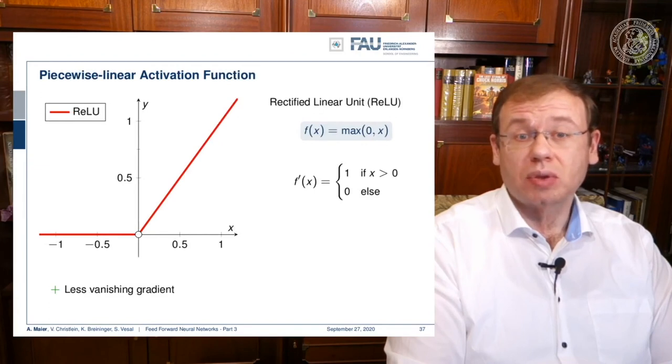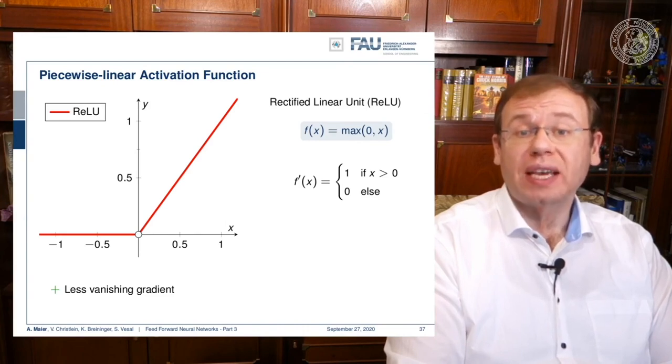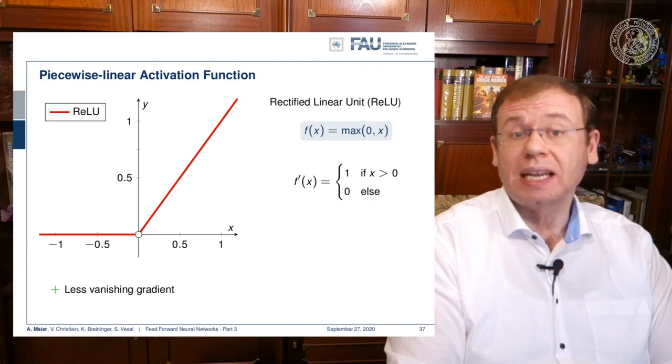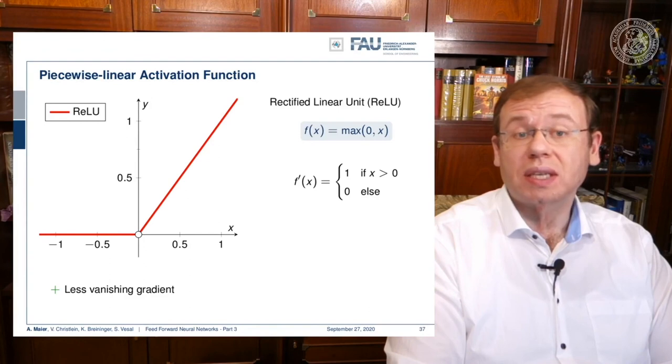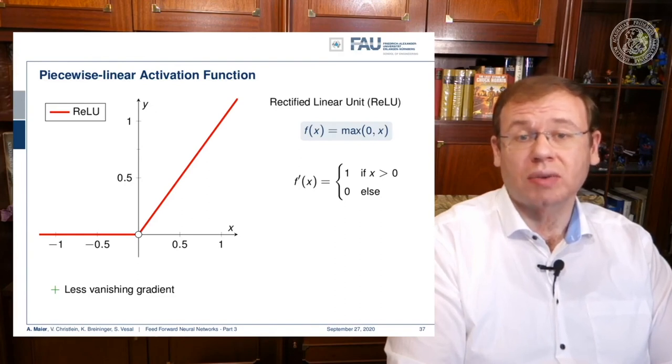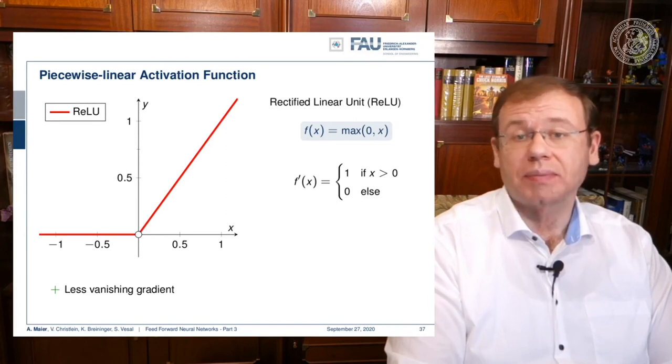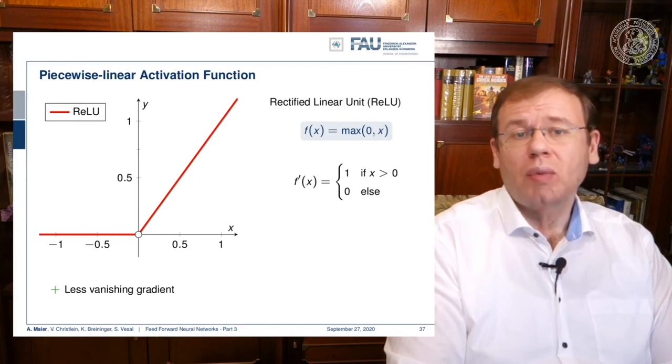What did people do to beat that? They introduced a piecewise linear activation function called the rectified linear unit, ReLU, which is the maximum of zero and x. Everything that is below zero is clipped to zero, and everything else is just kept. This is nice because we can compute this very efficiently. There is no exponential function involved. The derivative is simply one if x was greater than zero and zero everywhere else. There's much less vanishing gradient, as essentially the entire positive half space can be used for gradient descent. There are also some problems with the ReLU, which we will look at in more detail when we talk about activation functions.